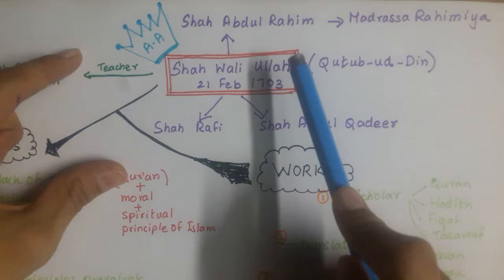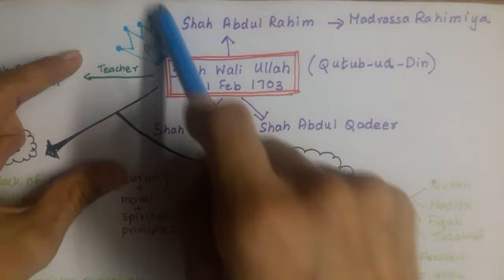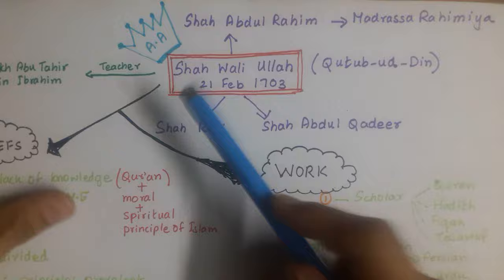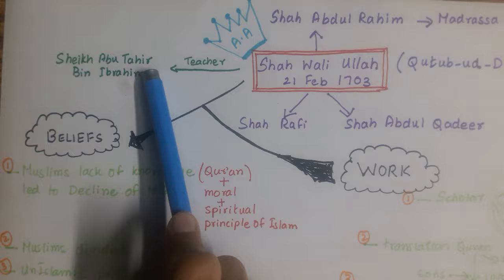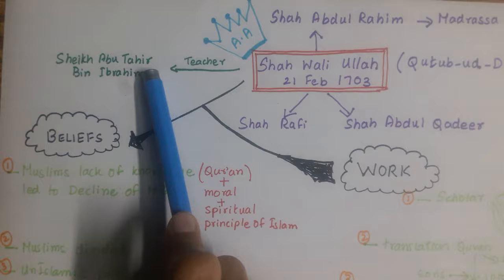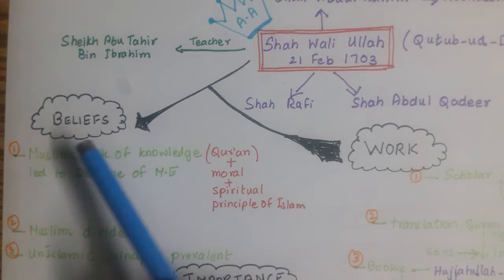Shah Waliullah was born during the reign of Aurangzeb Alamgir — I drew a crown on the mind map to make it easier to remember. He had two sons: Shah Raffi and Shah Abdul Qadir. His teacher was Sheikh Abu Tahir bin Ibrahim — learning that name can be helpful. There are three key areas to focus on: his beliefs, his work, and the importance of his contributions.